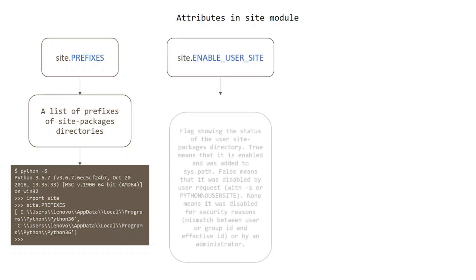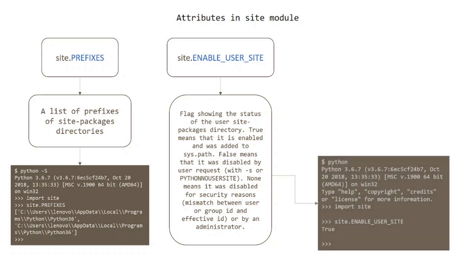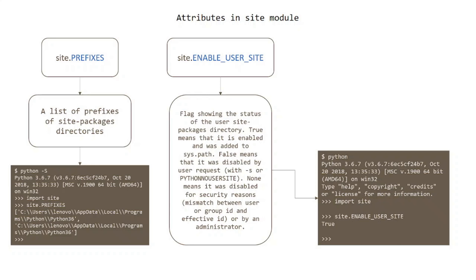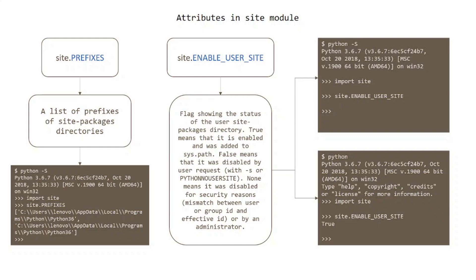The ENABLE_USER_SITE attribute shows the status of the user site-packages directory. True means it is enabled and was added to the system path. False means it was disabled by user request. None means it was disabled for security reasons — a mismatch between user or group ID and effective ID, or disabled by an administrator. If Python is in general interactive mode, the attribute equals True; if Python was started with the -S option, ENABLE_USER_SITE is None.